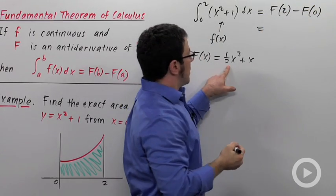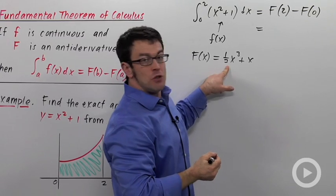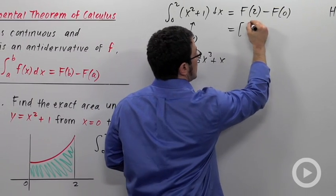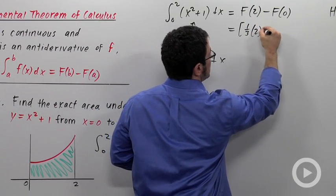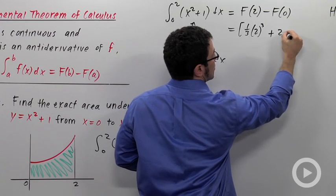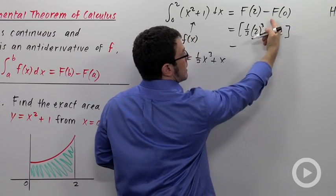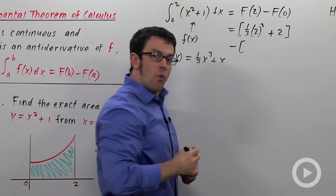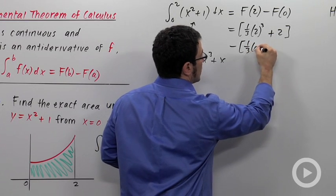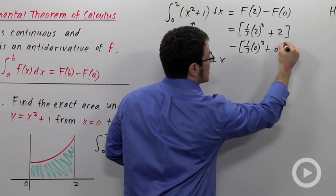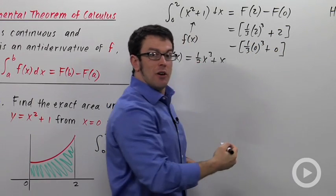Now capital F of 2 is 1 third of 2 cubed, 1 third of 2 cubed plus 2 minus capital F of 0, 1 third of 0 cubed plus 0. This is just going to be 0.